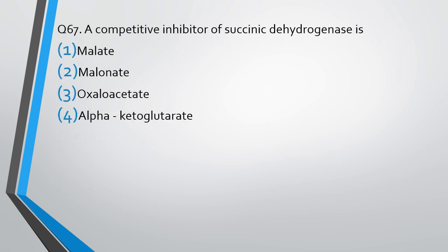Question number 67. A competitive inhibitor of succinic dehydrogenase is: (1) malate, (2) malonate, (3) oxaloacetate, (4) alpha-ketoglutarate. The correct answer is option 2, malonate.